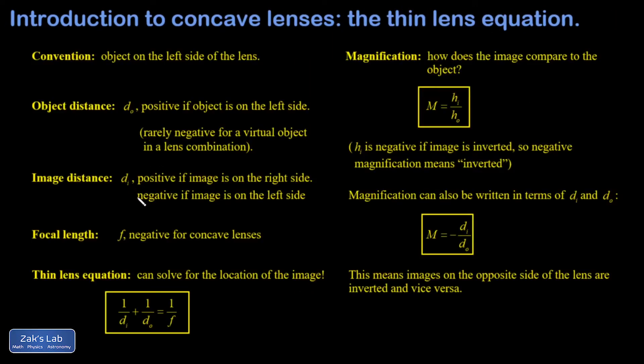Here's how we get quantitative about where the image forms and how much is magnified. So we have a lot of sign conventions involved here and a couple simple equations. First, by convention, we're always going to put the object on the left side of the lens. Second, the object distance, that's the distance between the object and the lens, is positive if the object is on the left side. Now we will rarely look at cases in a lens combination where an image produced by the first lens lands on the wrong side of the second lens. In that case, you have a negative object distance and it's called a virtual object. And I'll post a link to an example when it's ready. But again, the vast majority of the time we're talking about positive object distances on the left side of the lens.